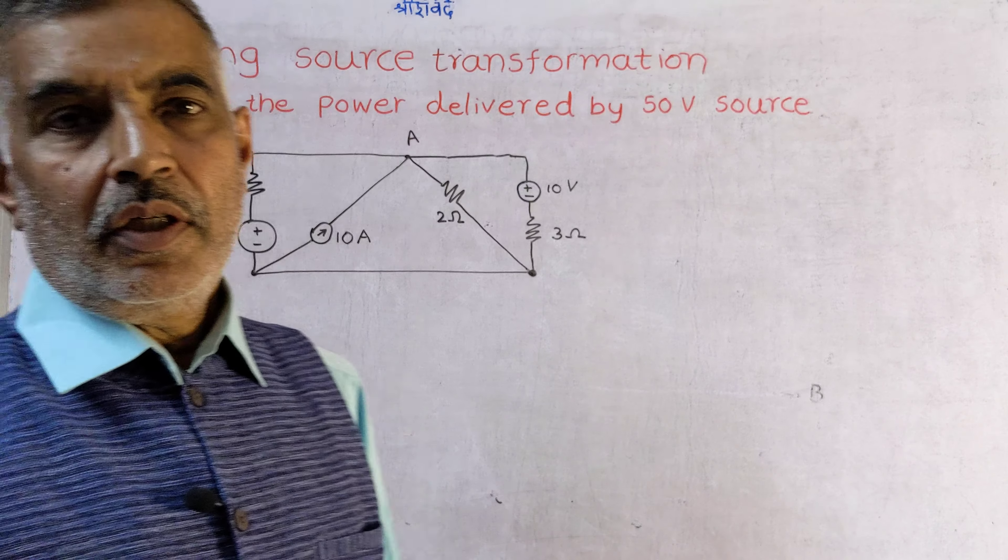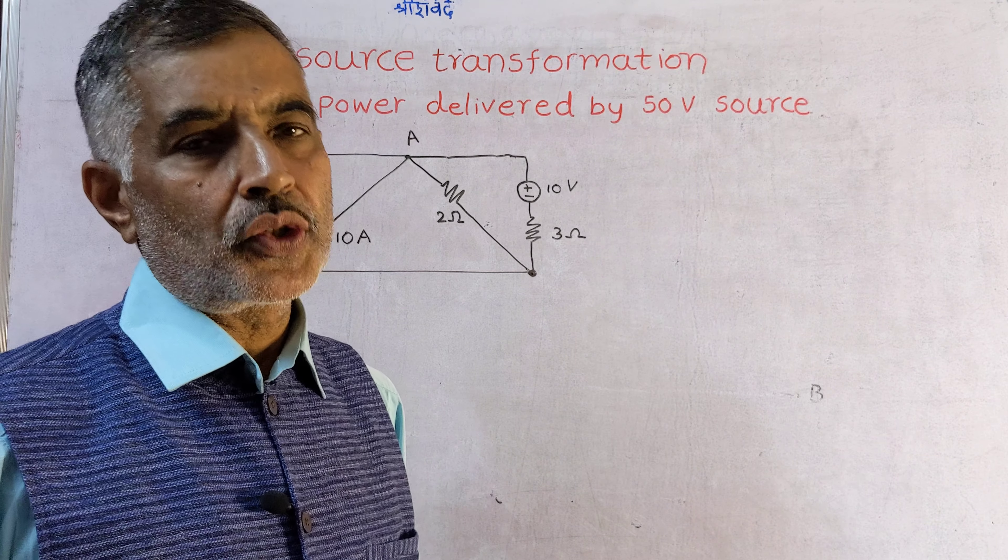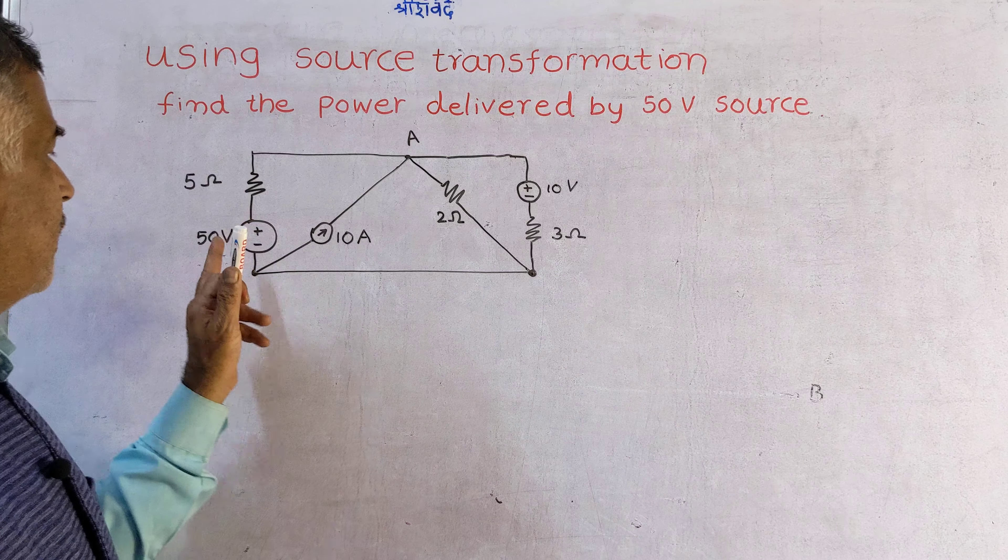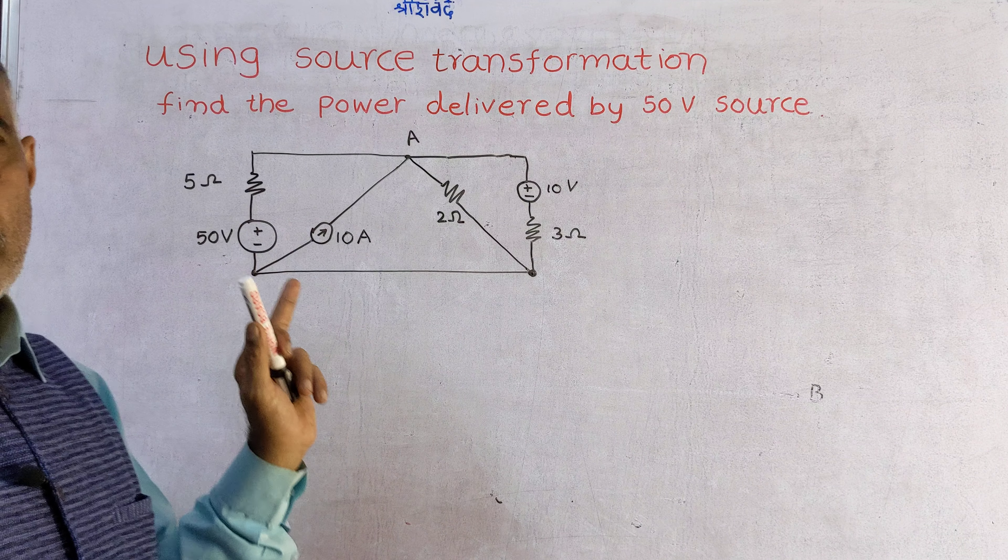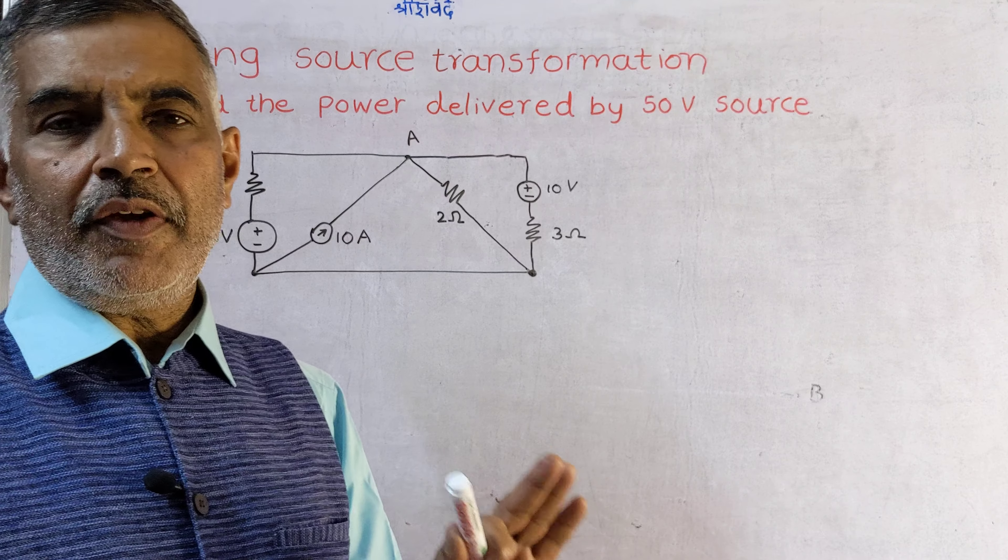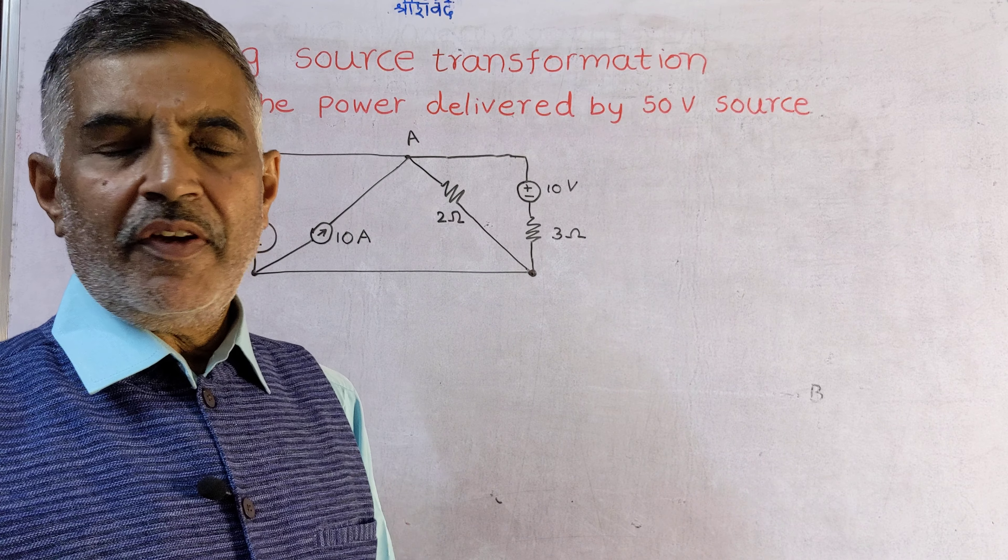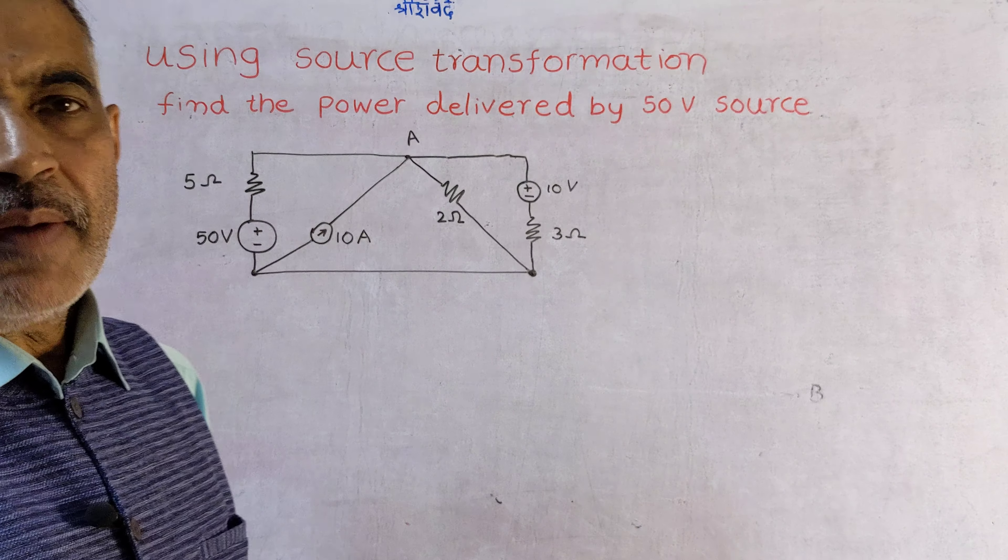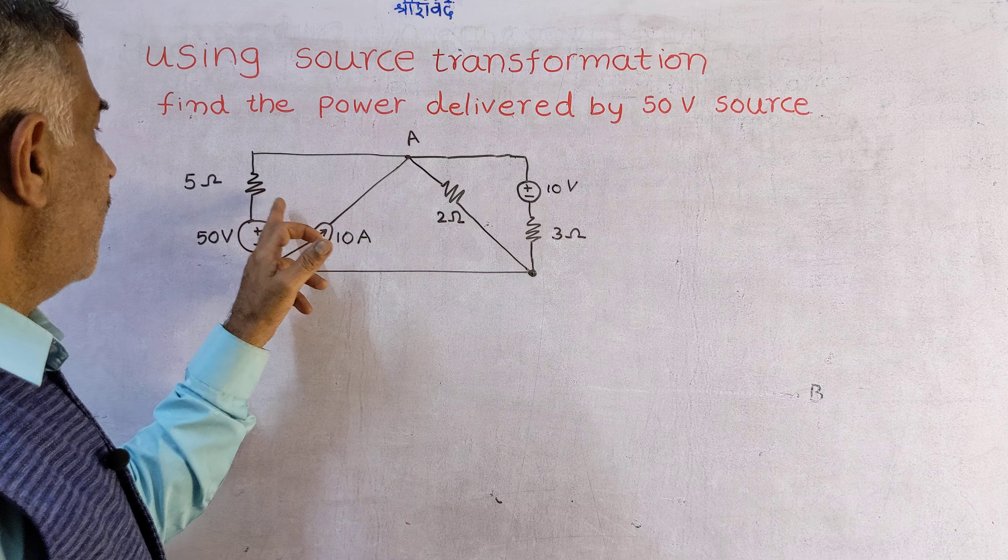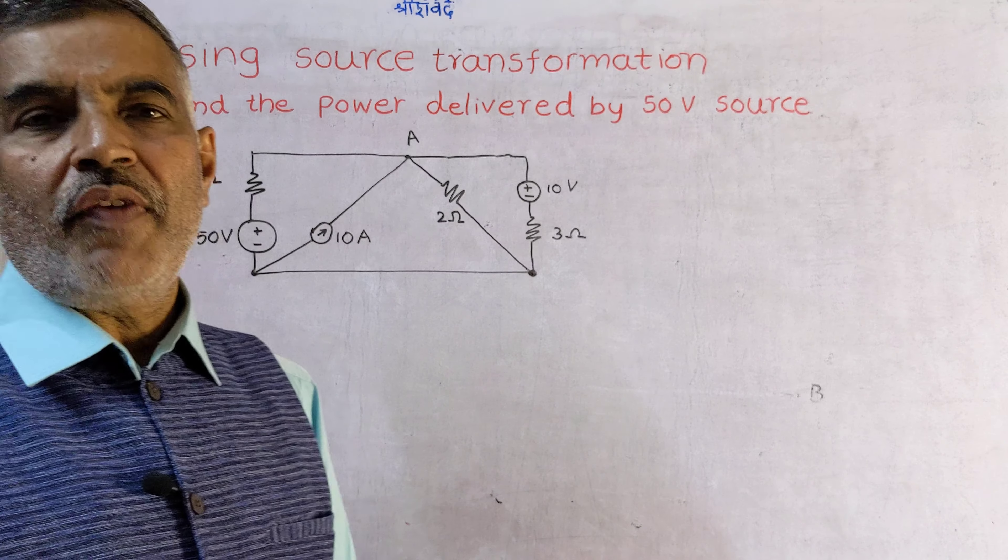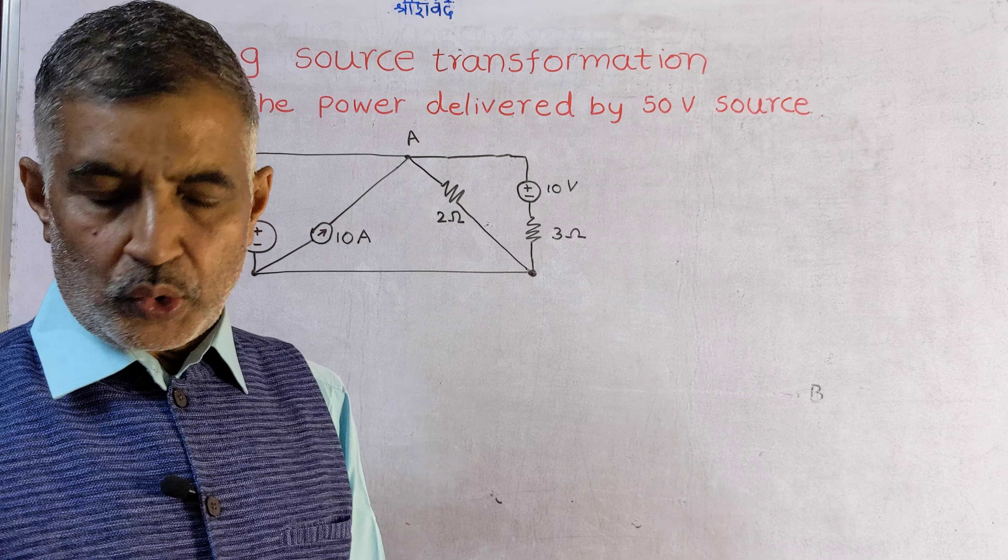Find the power delivered by 50 volt source. This is the 50 volt source. Now I will retain this 50 volt source because ultimately I have to find power delivered by 50 volt source. Therefore, I am not going to use source transformation for this because it is going to vanish if I use source transformation for this.